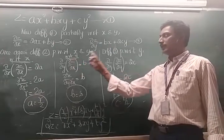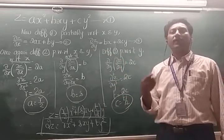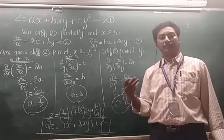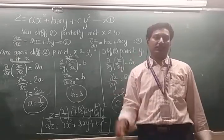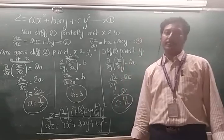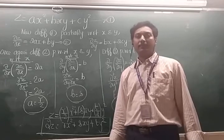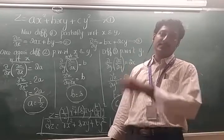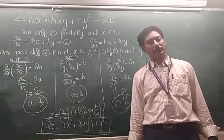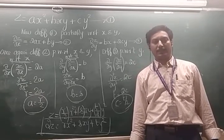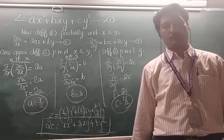From equations 2 and 3, we proceeded one more time differentiating with respect to x and y to find a, b, and c. After finding those values we substituted them back into equation 1. That is the idea behind forming PDEs by eliminating arbitrary constants. I hope you understand. Stay safe, stay healthy, stay happy — thank you so much.